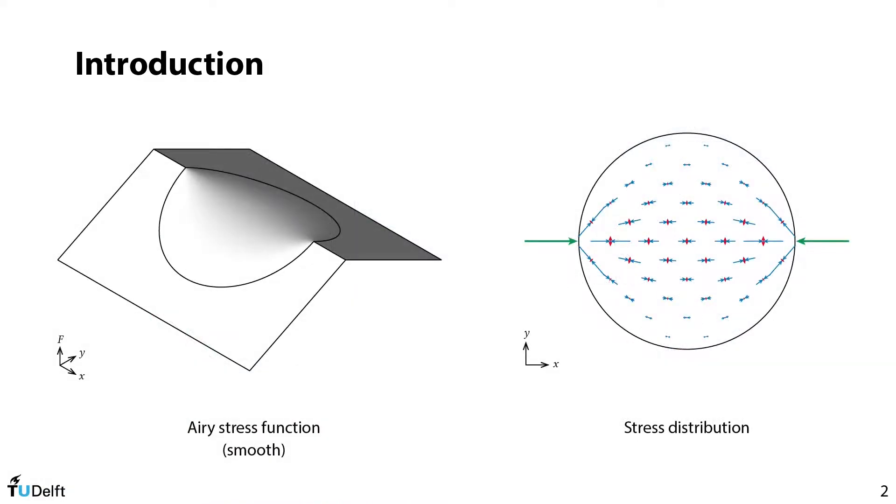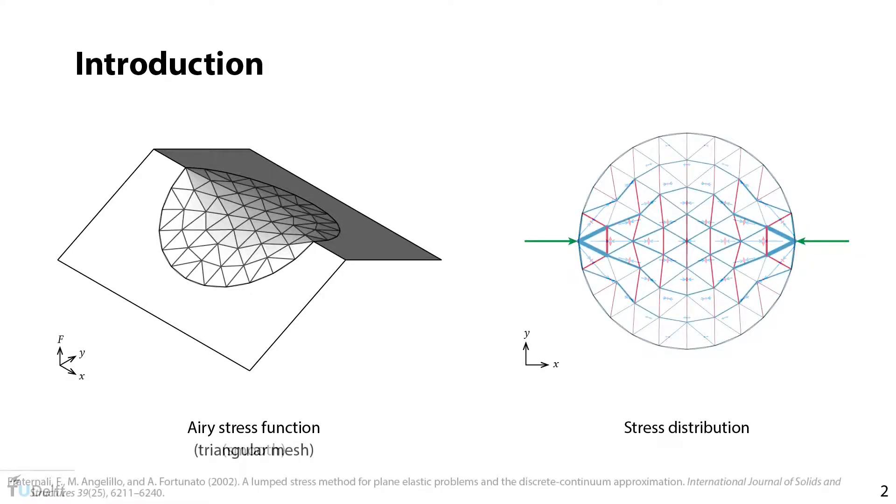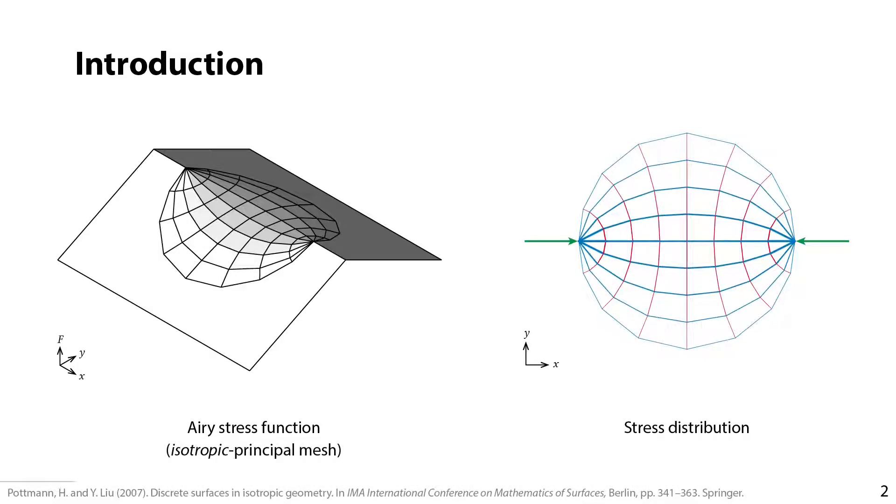Apart from the discrete stress function, a smooth Airy stress function can characterize a smooth stress tensor field. Here's a disk subject to compression forces. When this smooth stress function is approximated by a triangle mesh, the distributed stresses condense into forces. On your right, the blue bars are compression forces, the red are tension. One can also use a principal mesh to approximate the same stress function, so that the principal stresses become more clearly visible.